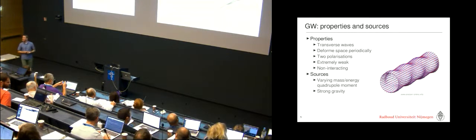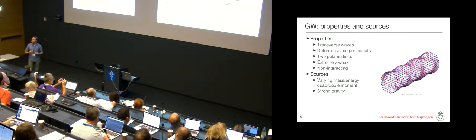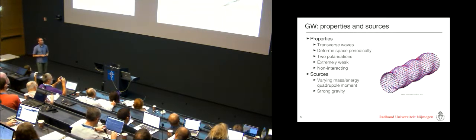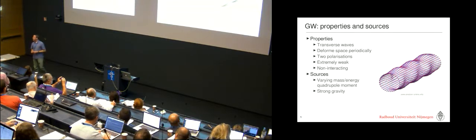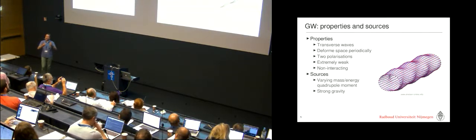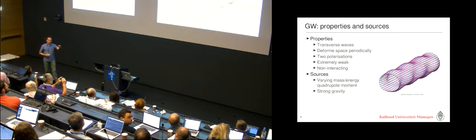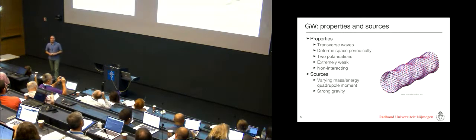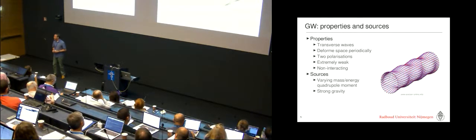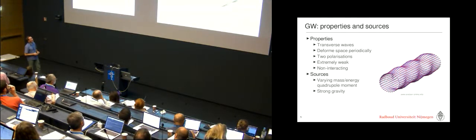There's a few other nice properties. There's two polarizations, so you can learn even more about the sources. They hardly interact, so they go through everything. You can see right up to the most dense parts in the universe. The catch is, of course, that they're extremely weak.